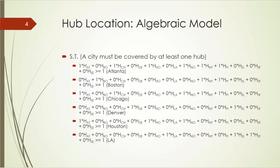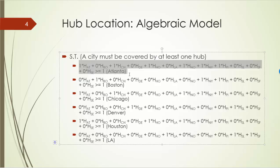That is, each city must be covered by at least one hub. Once again, let's use Atlanta as example. This constraint over here guarantees that Atlanta will be covered by at least one hub. Let's take a look why that is the case. We know that there are five cities within 1,000 miles of Atlanta. They are Atlanta itself, Chicago, Houston, New Orleans, New York, and Pittsburgh.